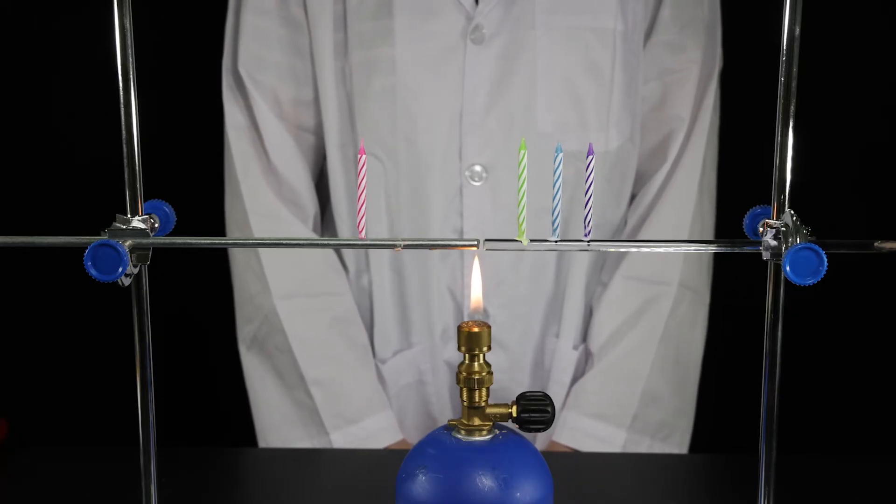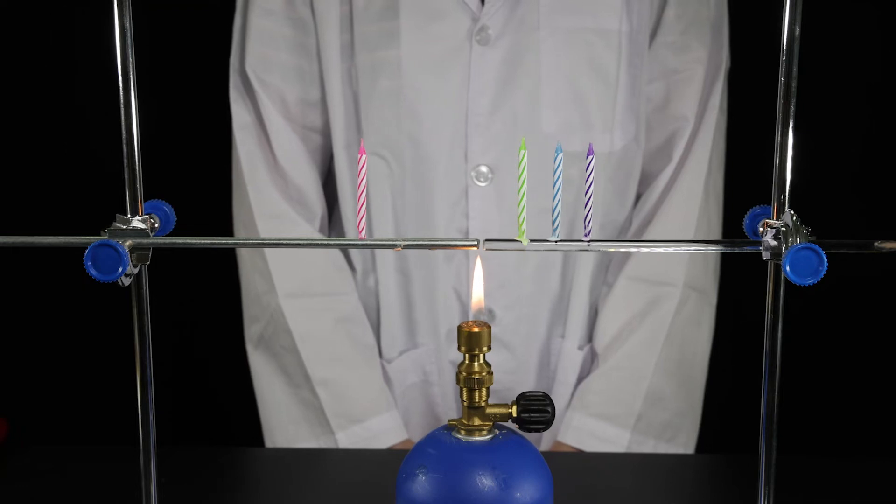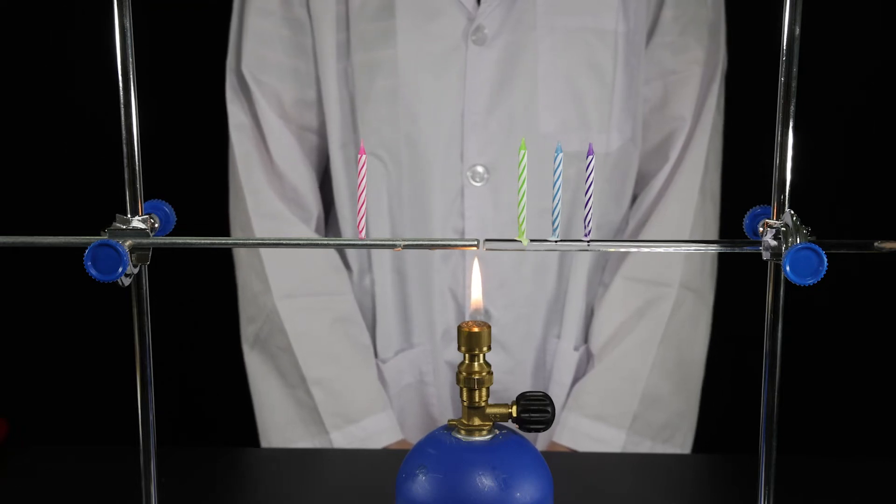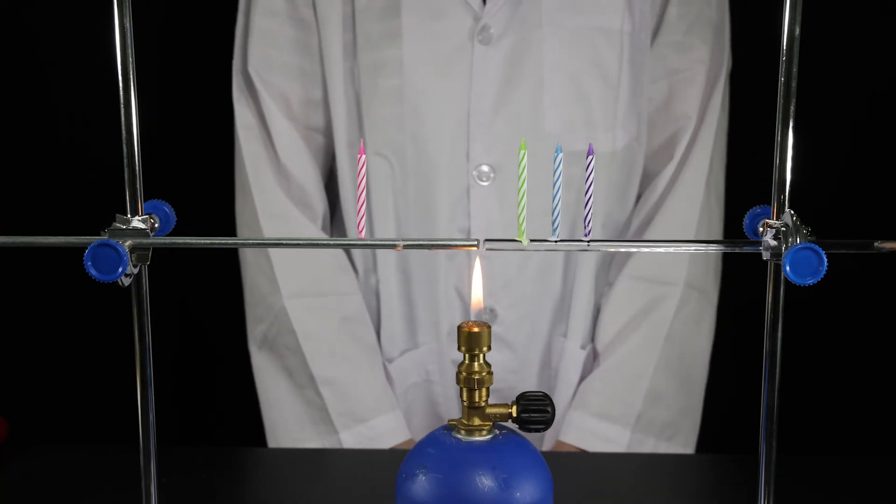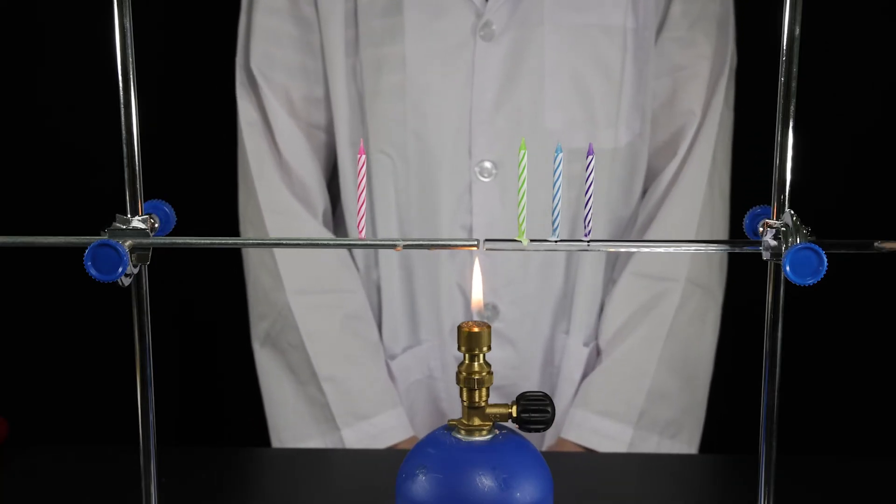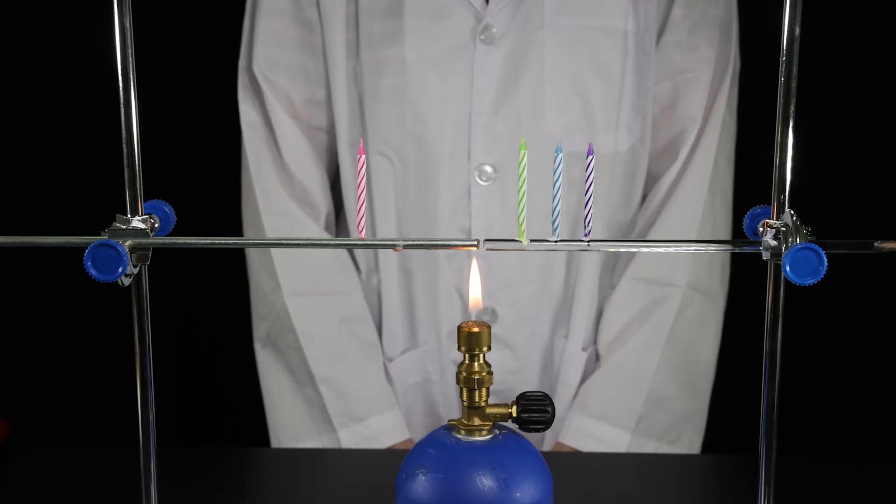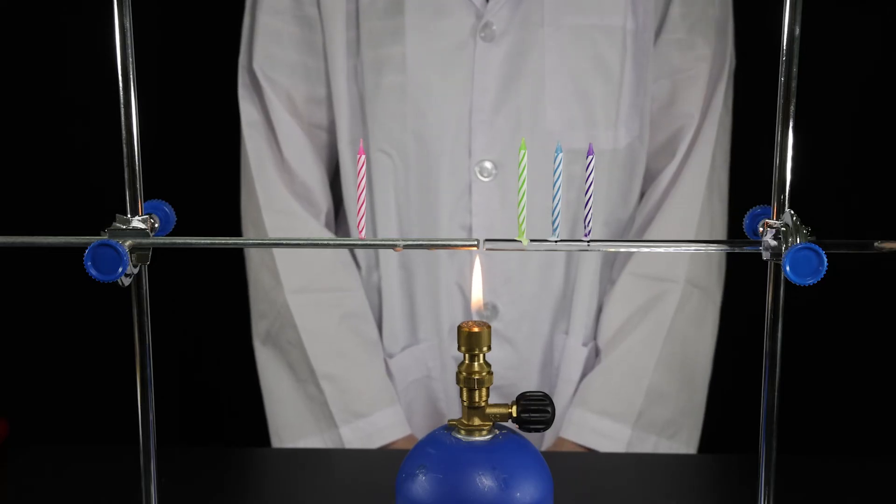Look, thermal energy is moving along the metal rod from left to right, from hot to cold. The candles on the glass rod are not melting. The glass rod is a poorer conductor of heat compared to the metal rod.